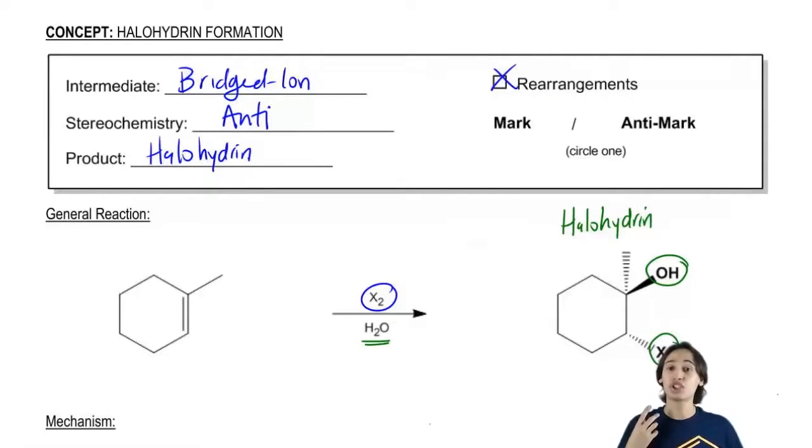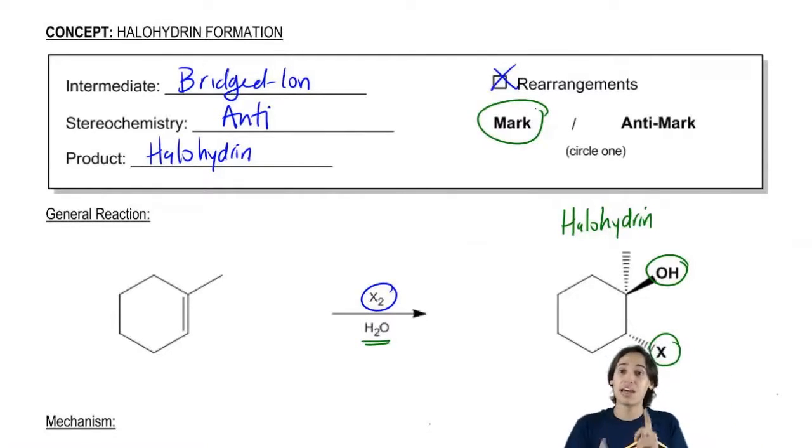And finally, this will have Markovnikov regiochemistry because now I'm adding two different things. So I do have to be aware of which one goes on the Markovnikov side and which one goes on the anti-Markovnikov side. But overall, we would say this is a Markovnikov reaction because it's driven by the stability of the intermediate.